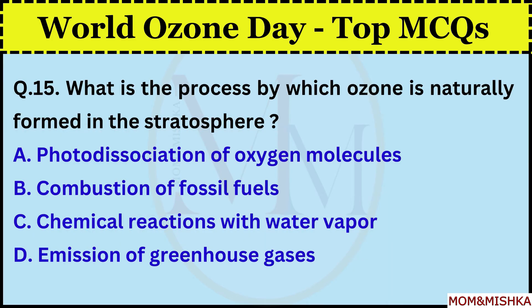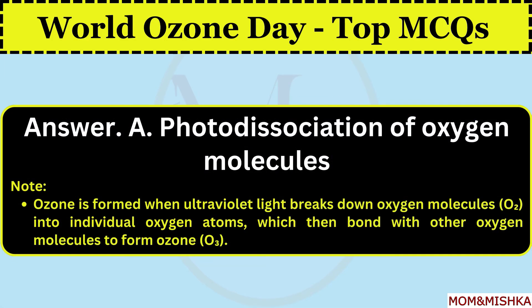What is the process by which ozone is naturally formed in the stratosphere? Option A — photo dissociation of oxygen molecules. Ozone is formed when ultraviolet light breaks down oxygen molecules (O2) into individual oxygen atoms (O), which then bond with other oxygen molecules to form ozone (O3).